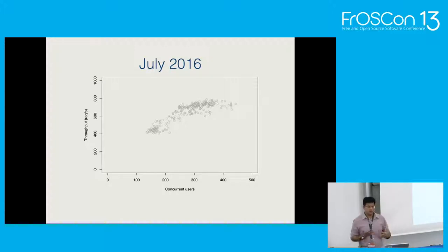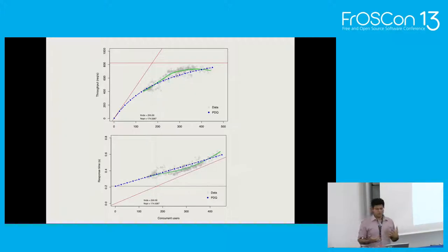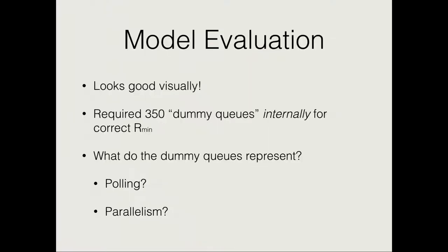We had some data to start with—a scatter plot collected in July 2016. On the y-axis is throughput, on the x-axis is the number of concurrent users. After doing the modeling, the blue line represents outputs from the PDQ model, and we can see visually that the model does a good job of explaining the performance characteristics of the application. When we actually evaluated the model, there's a technique called dummy queues in PDQ, and we used about 350 of those to come up with the right values for certain parameters. The question became: what do these dummy queues represent? Is there some parallelism in the application, or does this describe some kind of polling behavior?